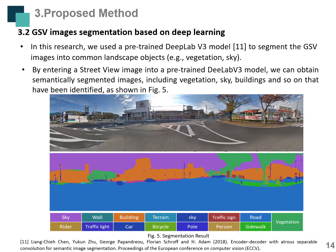The second step is GSV image segmentation based on deep learning. With the development of artificial intelligence technology, deep learning performs well for image recognition tasks. In this research, we use a pre-trained DeepLab V3 model to segment the GSV images into common landscape objects. By entering a street-view image into the pre-trained DeepLab V3 model, we can obtain semantically segmented images including vegetation, sky, buildings, and other elements, as shown in Figure 5.